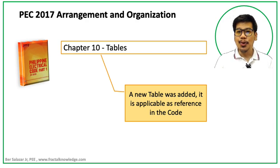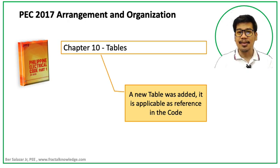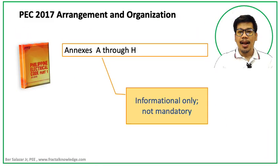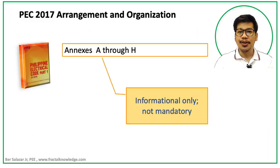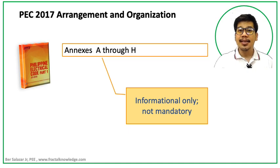Chapter 10 is dedicated to tables, applicable as a reference in the code. We need to make sure that every RME and REEE is well-versed in looking up values in the tables and knows their details. Last in the structure and organization, we have annexes, which you can read independently. Annexes are not mandatory but they support, supplement, and explain parts of the code.